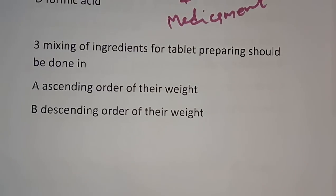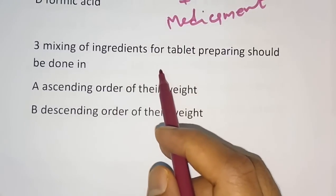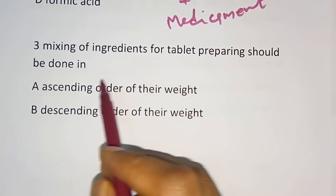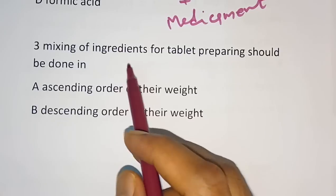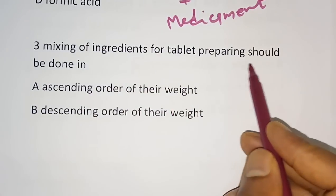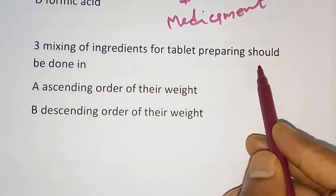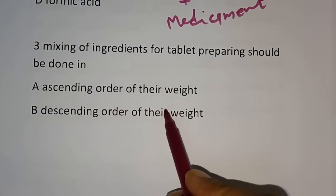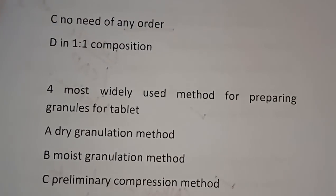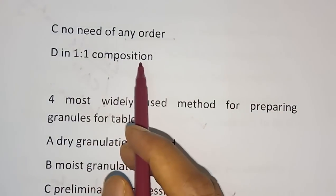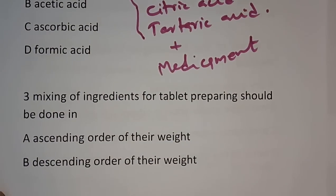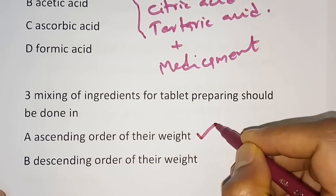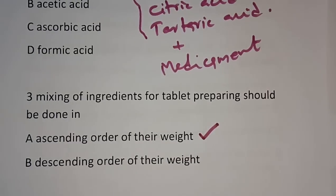Question number 3: Mixing of ingredients for tablet preparation should be done in what order? Options are ascending order of weight, descending order of weight, or no particular order in 1:1 composition. The correct answer is ascending order of weight.